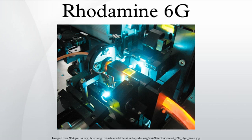Rhodamine 6G is a highly fluorescent Rhodamine family dye. It is often used as a tracer dye within water to determine the rate and direction of flow and transport. Rhodamine dyes fluoresce and can thus be detected easily and inexpensively with instruments called fluorometers.